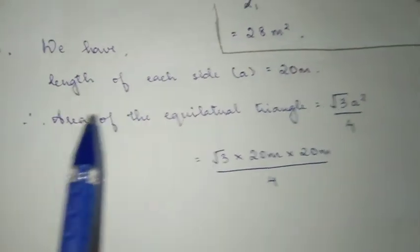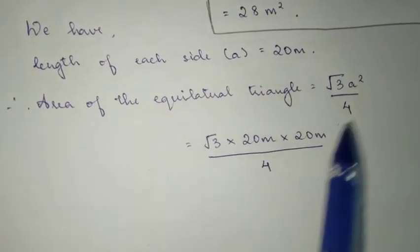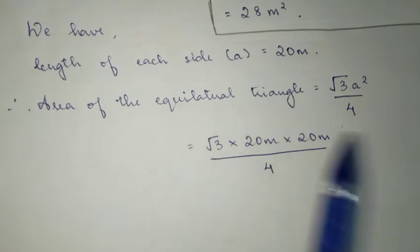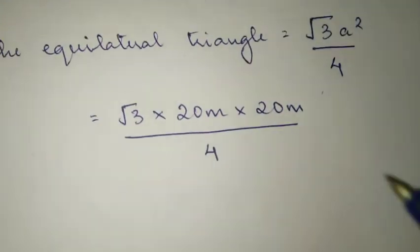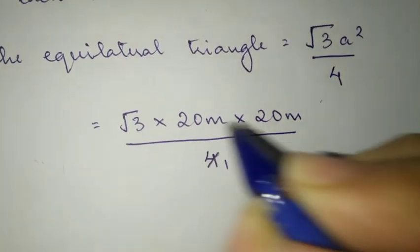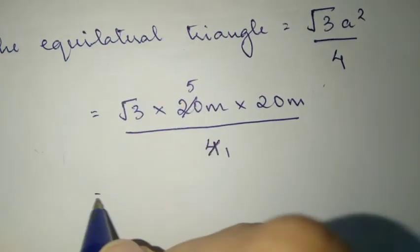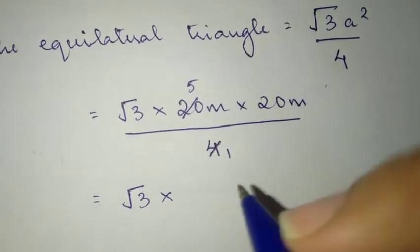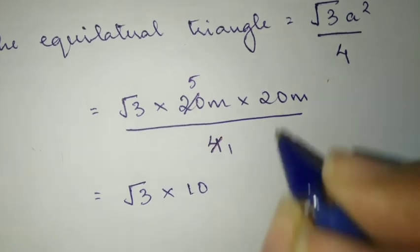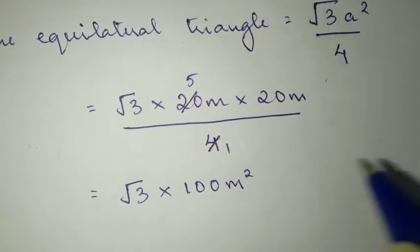Therefore, area of the equilateral triangle - we use the formula. Here, a is 20, so a squared is 20 into 20. If you divide it with 4, 5 times 20, you have root 3 into 5 into 20, which is 100 meter square.